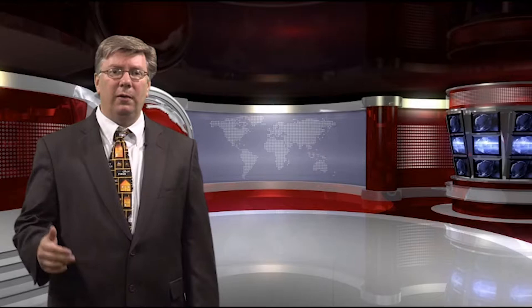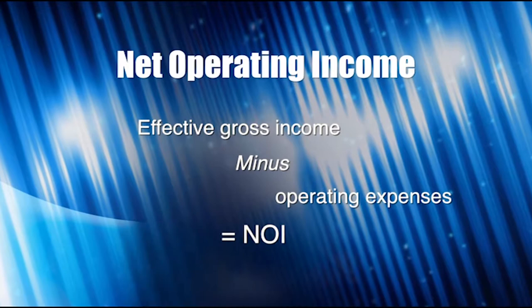Once we have all operating expenses paid by the building owner, we can calculate one of the most important financial numbers — the net operating income, or NOI. The effective gross income minus operating expenses leaves us with the NOI. This number does not include debt service — the principal and interest of the mortgage payment — nor tax depreciation, nor immediate capital expenditures like putting a new roof on the building. Operating expenses are the recurring costs to manage and run the building. Having the NOI allows us to calculate the cap rate, which is the most often quoted evaluation of any commercial property.